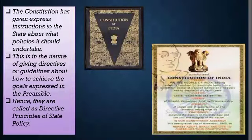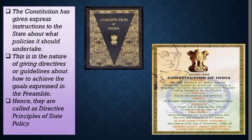The constitution has given instructions to the state about what policies are mentioned in the preamble and how they need to be undertaken. The nature of these directive principles and guidelines about how to achieve these goals are expressed in the preamble. Hence, they are called the Directive Principles of State Policy.